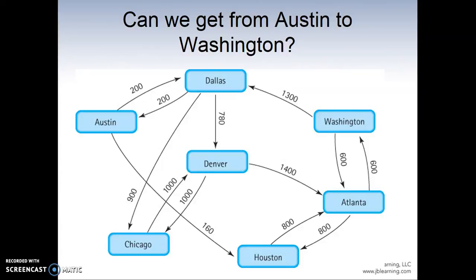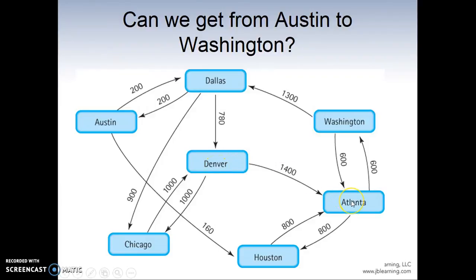In order to do that, we have to find neighbors — like the path. Neighbors to Austin should be Dallas. And the neighbor to Dallas can be Denver, and the neighbor to Denver is Atlanta, and the neighbor to Washington is Atlanta.